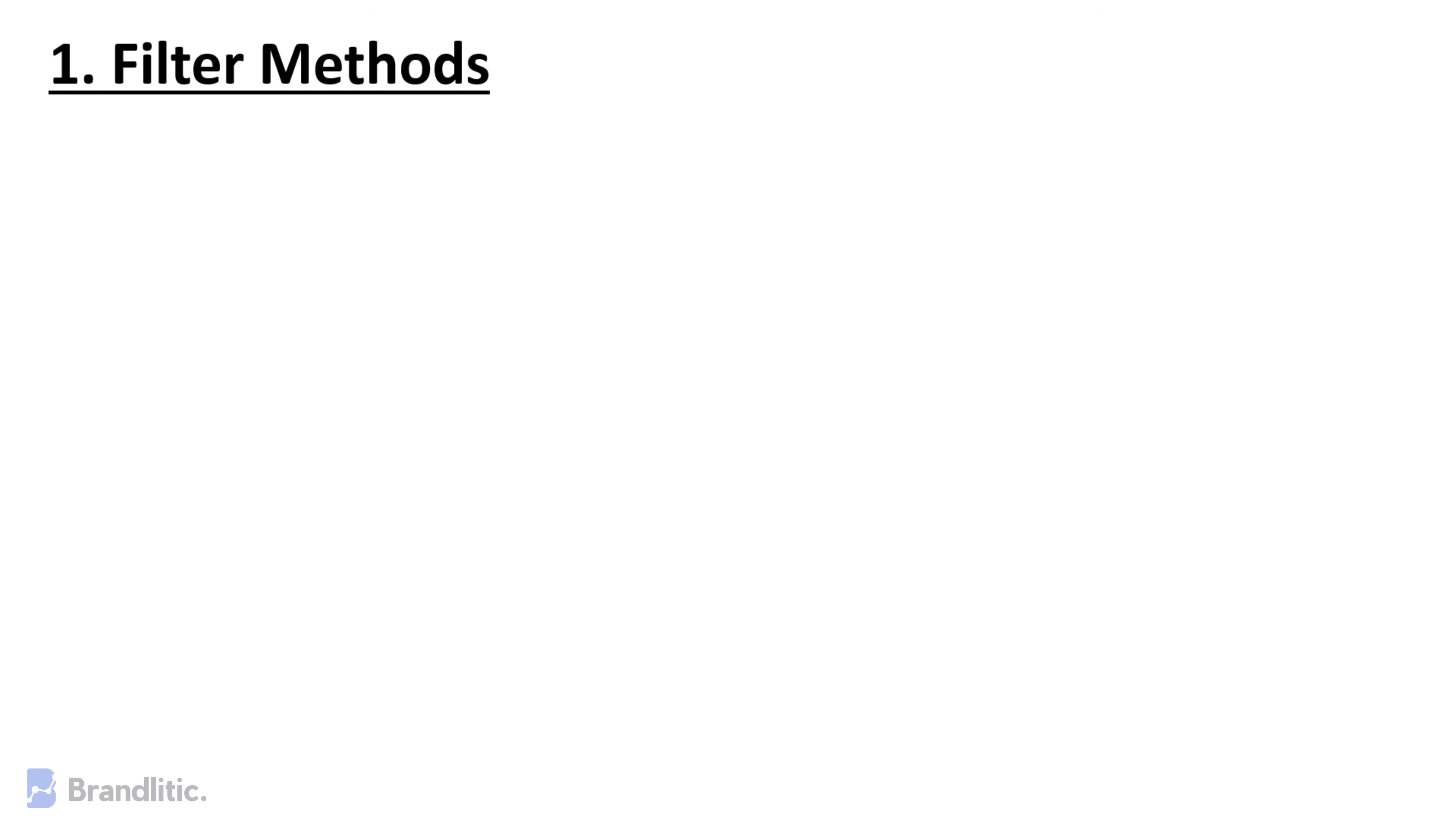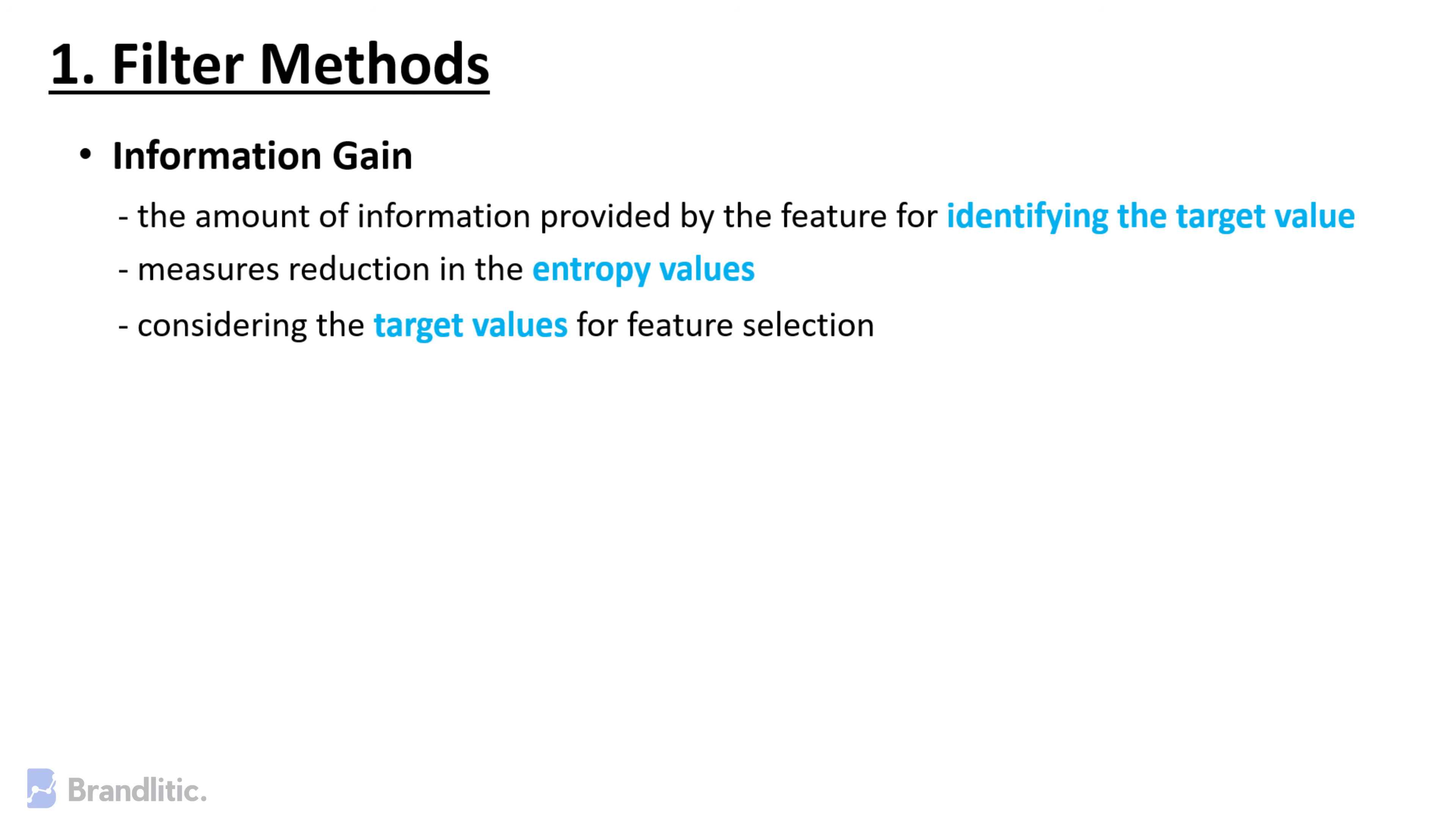Some techniques that come under this are Information Gain, which is defined as the amount of information provided by the feature for identifying the target value and measures reduction in entropy values. Information Gain of each attribute is calculated considering the target value for feature selection.